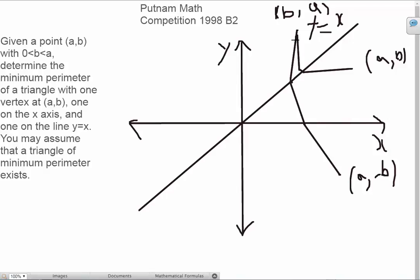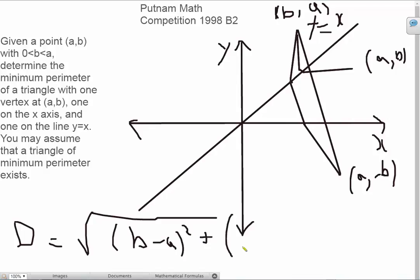Now notice that the shortest distance between any two points is always going to be a straight line. And so, let's draw a straight line here. What is the length of this line? Well, the length of this line I can find by using the distance formula. By using the distance formula we just get (b-a)² + (a+b)².